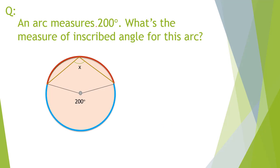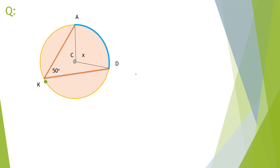An arc measures 200 degrees. What's the measure of inscribed angle for this arc? That's 100. Question can be given like this. Here we have to figure out central angle and that should be double of the inscribed angle. Double of 50 is 100.